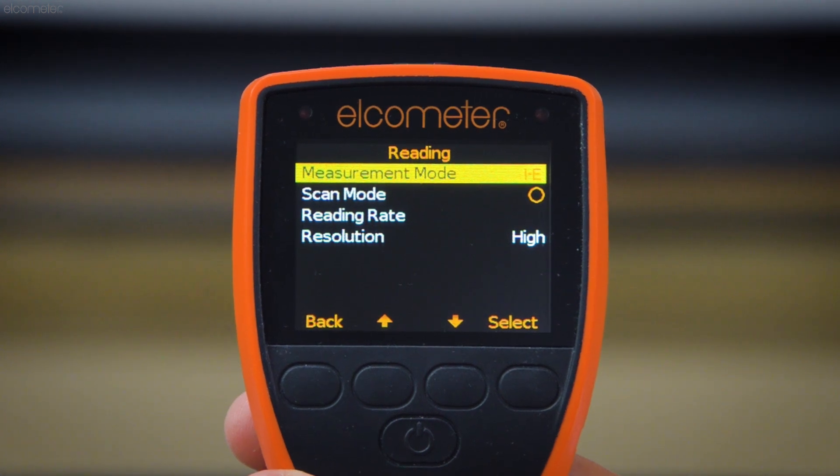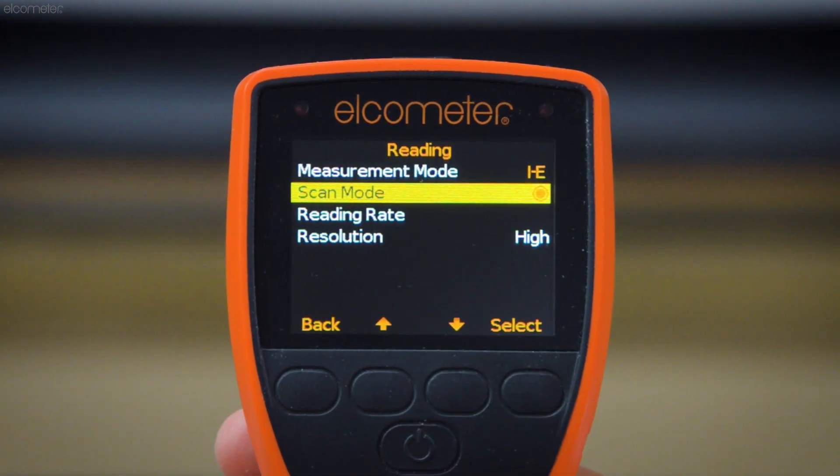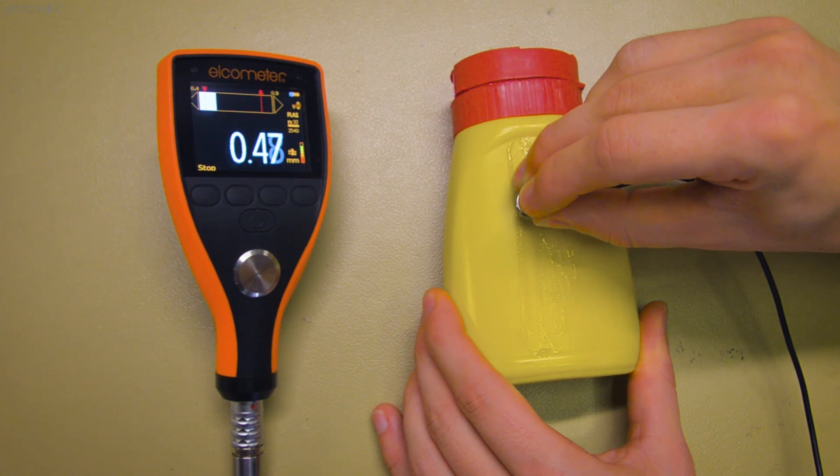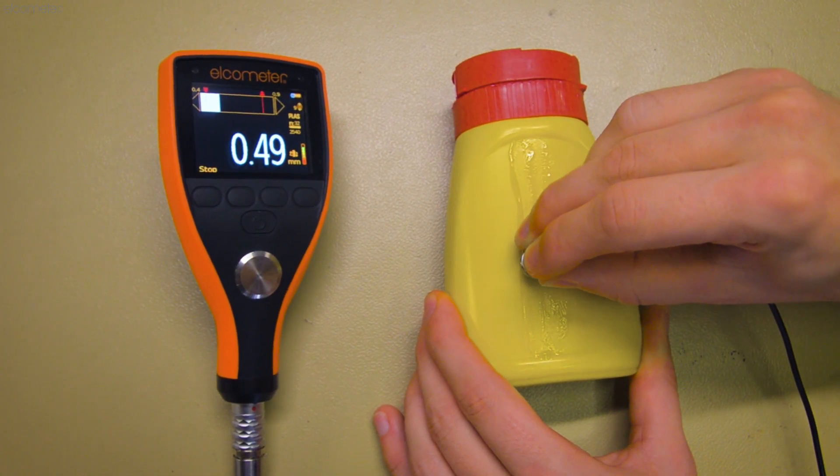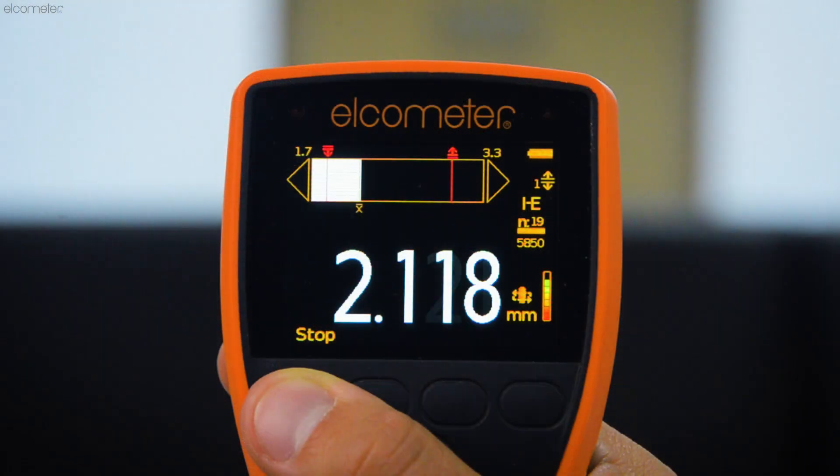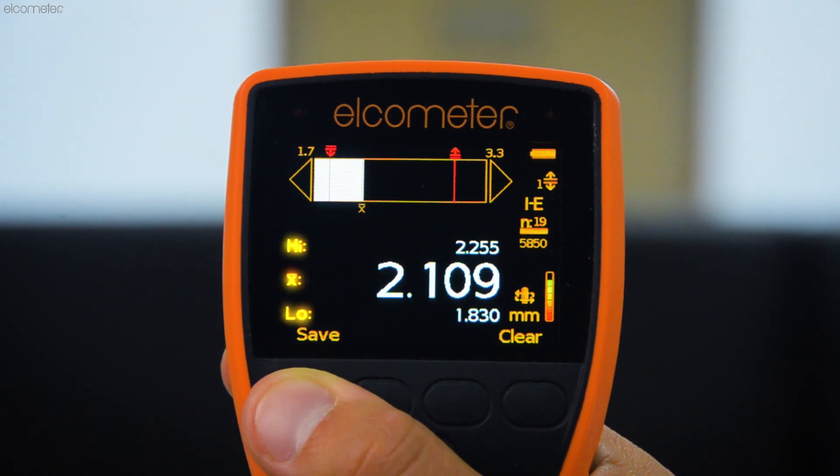Alternatively, the top of the range Elcometer PTG-8 has scan mode for checking large surface areas. Simply scrub the transducer over the test area, and the gauge will display the average, lowest, and highest thicknesses across the scanned area.